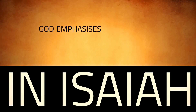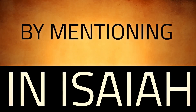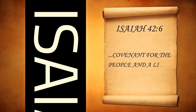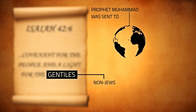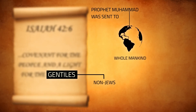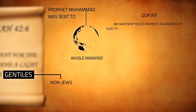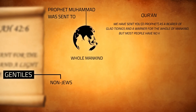In Isaiah, God emphasizes the universal mission of the coming person by mentioning that he will be made a covenant for the people and a light for the Gentiles — meaning non-Jews. The Quran confirms the Prophet Muhammad, peace be upon him, was sent to the whole of mankind, Jews and Gentiles alike. In the Quran, God tells us, 'We have sent you, O Prophet, as a bearer of glad tidings and a warner for the whole of mankind, but most people have no knowledge.'